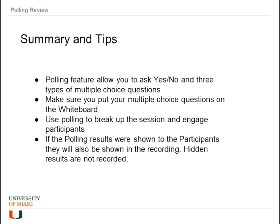In summary, the polling feature allows you to ask four types of questions: yes or no, and three types of multiple choice. If you're asking a multiple choice question, make sure you put your question on the whiteboard. You can use polling to break up the session, engage your users, keep them occupied and interested. Finally, if you are showing the results, they will be part of the recording. For example, we can see Bill said A and Brett said C — if this were a sensitive issue, you may want to keep answers hidden, because since this is being recorded, those answers will be preserved.